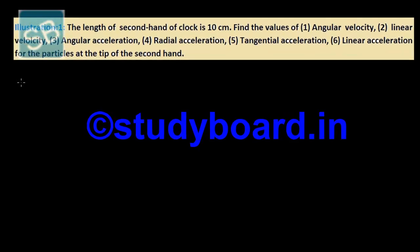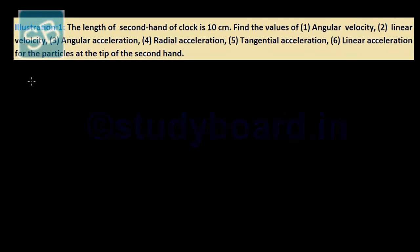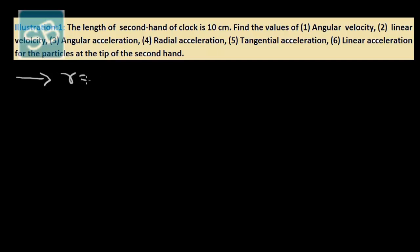Starting the first illustration: the length of the second hand of the clock is 10 centimetres. Here, the radius, or position vector, is provided indirectly. So r equals 10 centimetres.